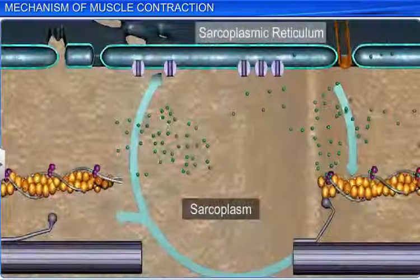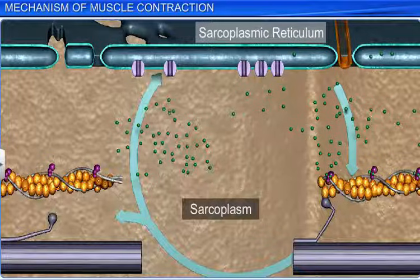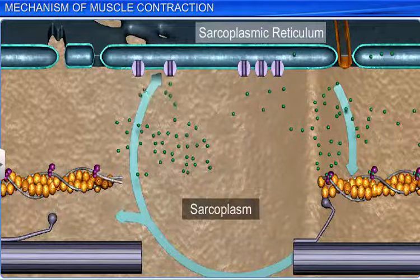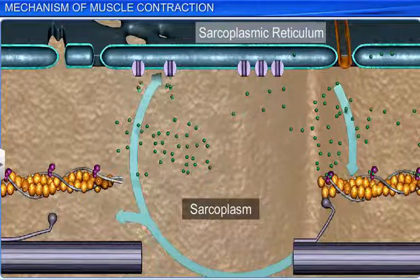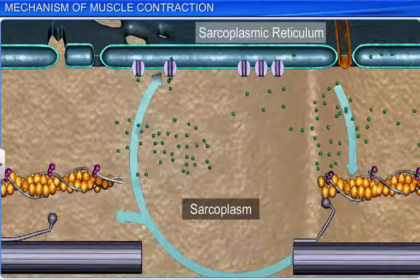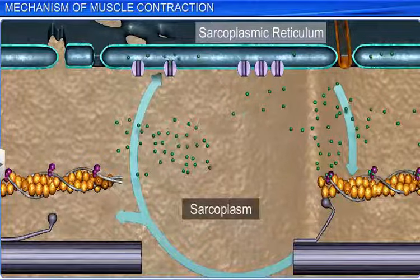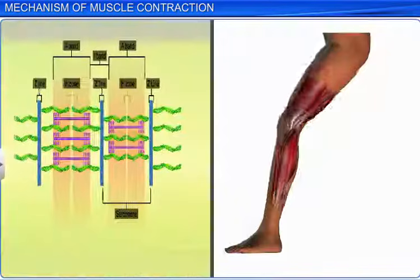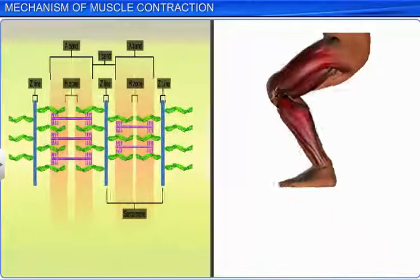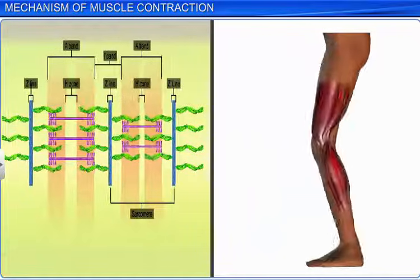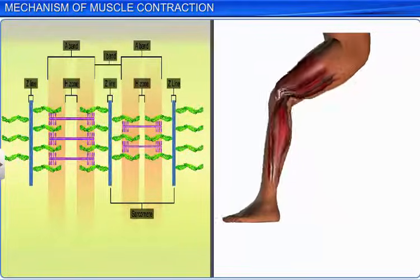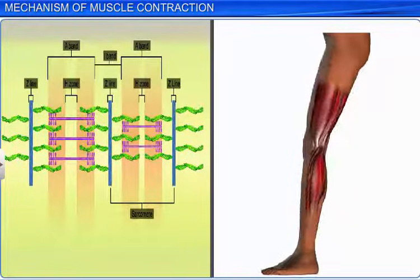The process repeats till calcium ions are pumped back into the sarcoplasmic reticulum, resulting in the masking of actin filaments. This causes the Z-lines to return to their original, relaxed position.